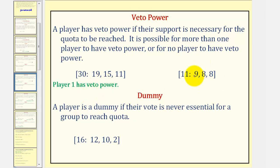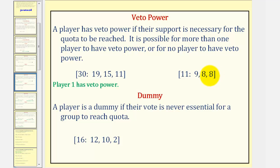Looking at our second example, notice no other players are dictators. If player one and player two form a group, they reach quota. If player one and player three form a group, they reach quota. And also, if player two and player three form a group, they reach quota. So no single player is required to reach quota, and therefore no player has veto power.